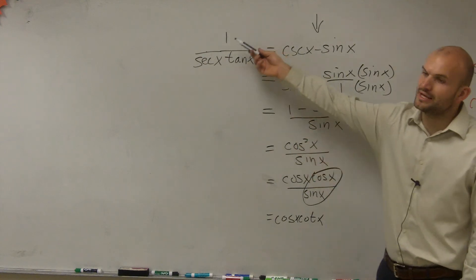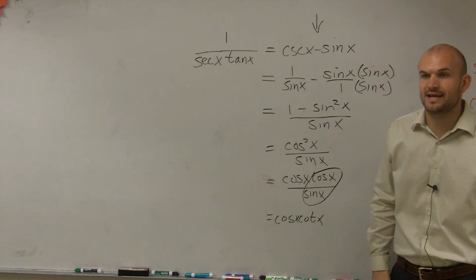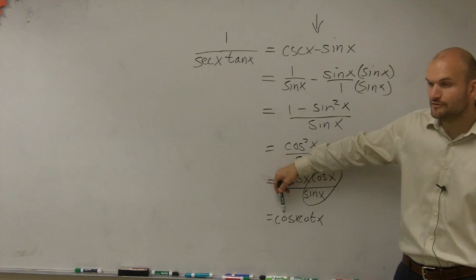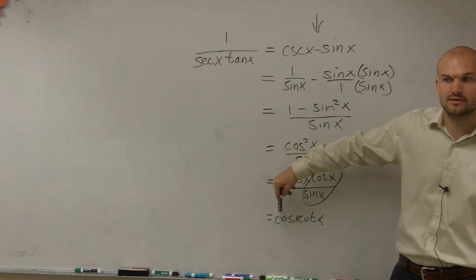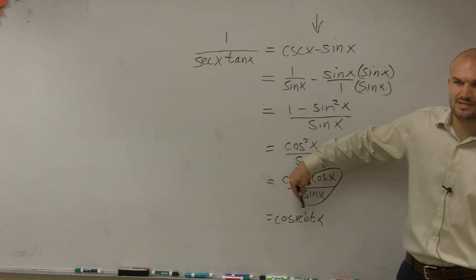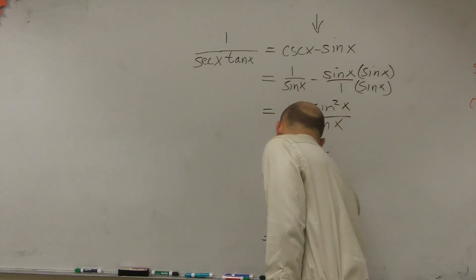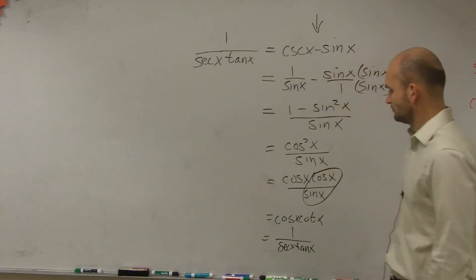Now, is that the same thing as 1 over secant of x or 1 over secant and tangent of x? Well, it's not displayed as the same. But if you took the reciprocal, cosine is the same thing as 1 over secant, right? And cotangent is the same thing as 1 over tangent. So therefore, you can simply display it as 1 over secant of x tangent of x. And there you go.